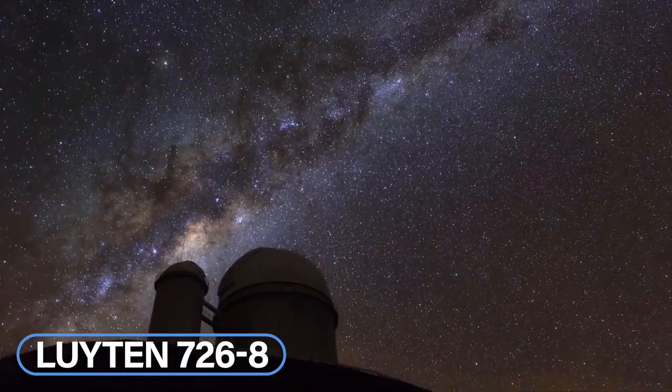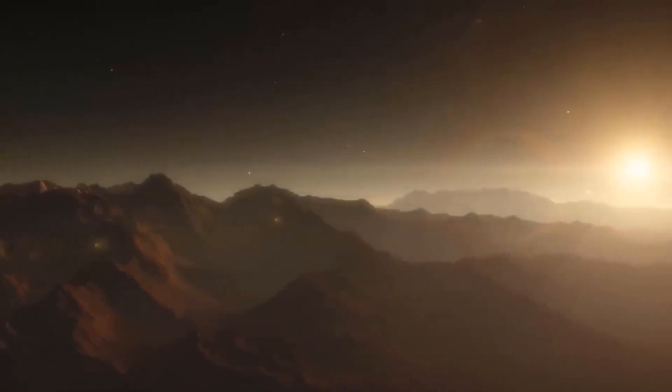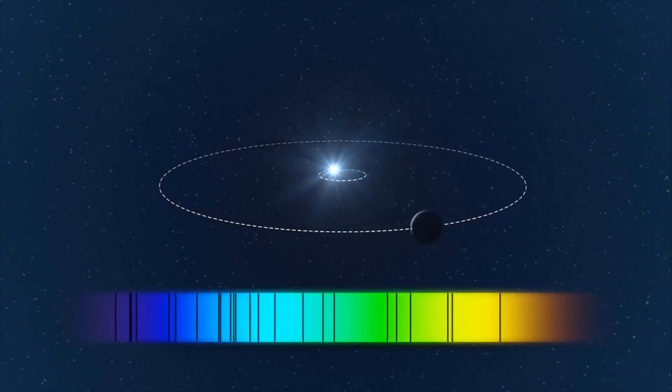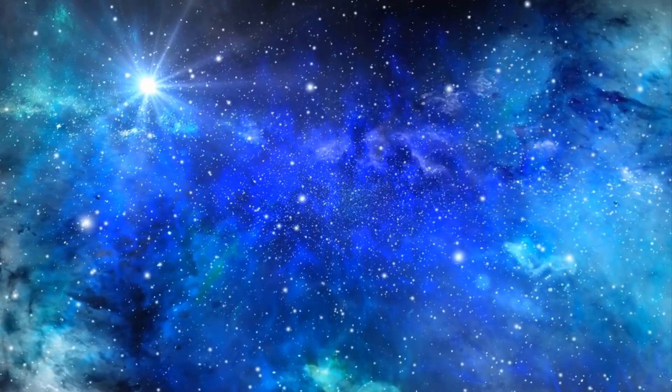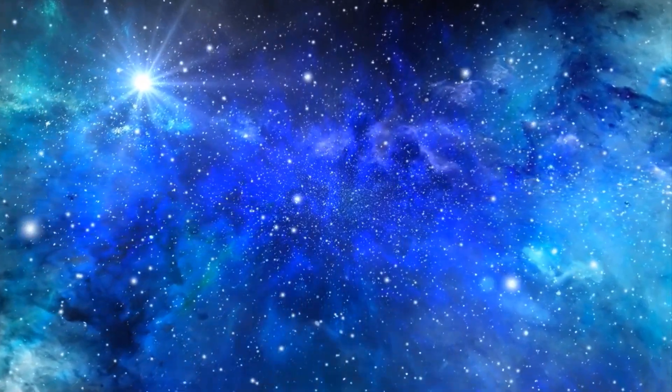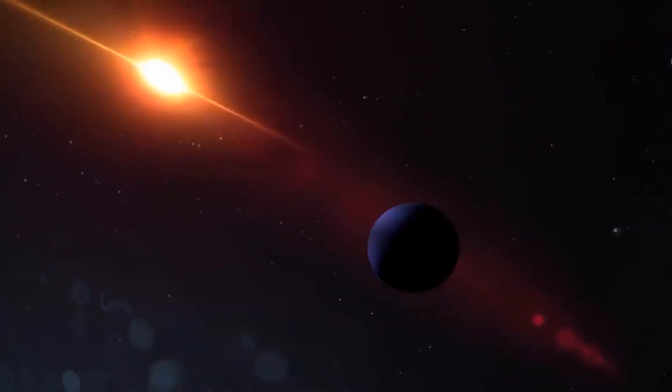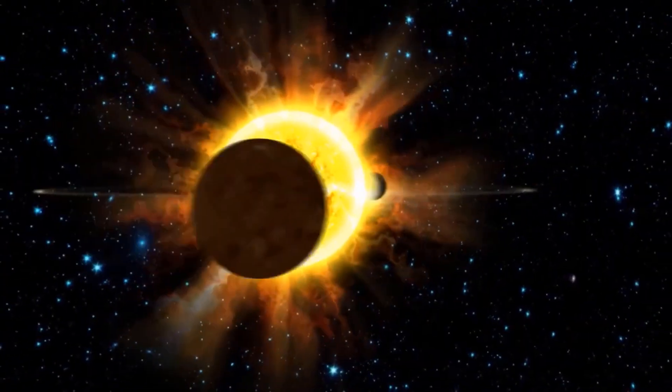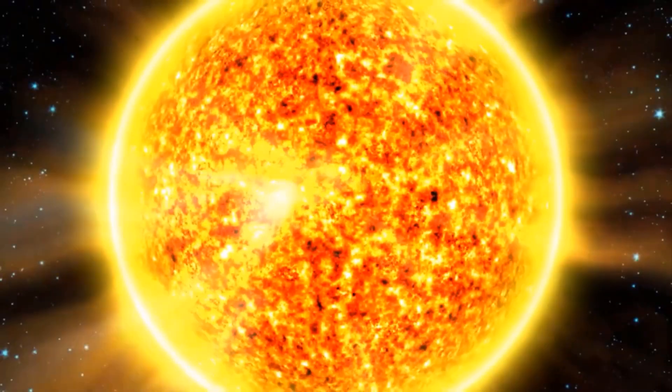Leighton 726-8. Leighton 726-8 is a binary star system located in the constellation of Cetus and is 8.73 light years from Earth. It is also commonly known as Glee 65 and is one of the members of a star system that contains a flare star that fluctuates in brightness over time. The star is named after Willen Jacob Leighton, who was instrumental in helping determine the proper motion of the object.